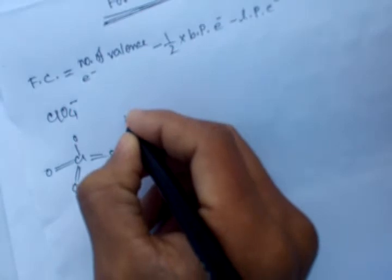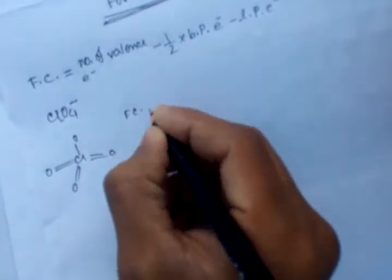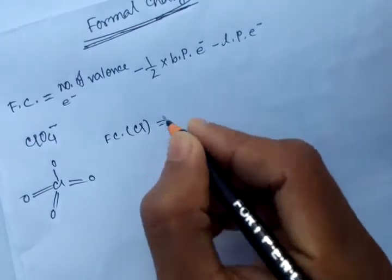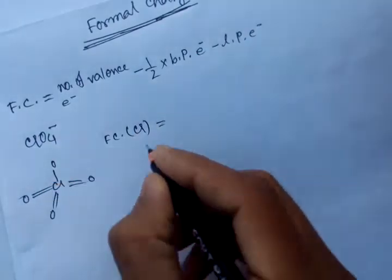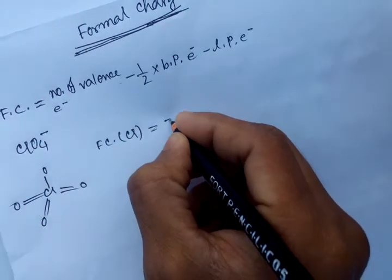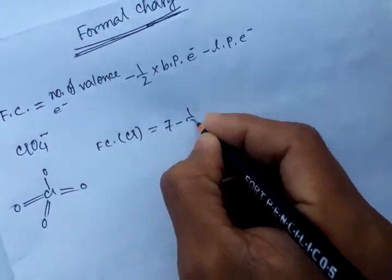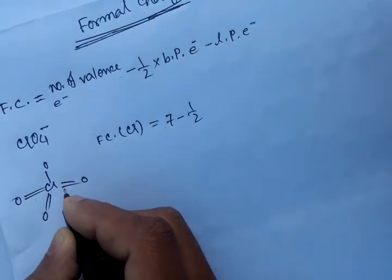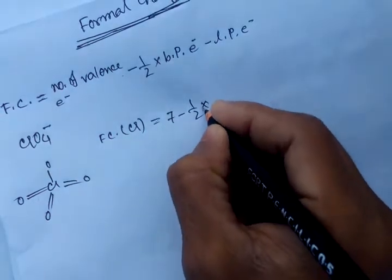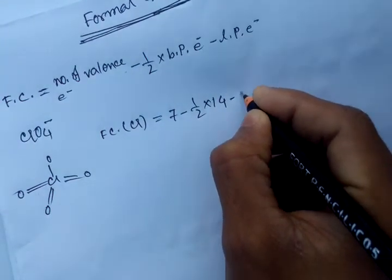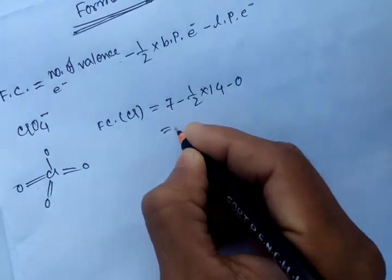Now we calculate the formal charge of this chlorine atom. Number of valence electrons of chlorine equals seven, minus half times the bonded electrons (which is 14, so half of 14 equals 7), minus lone pair electrons equals zero. So the formal charge of the chlorine atom is zero.